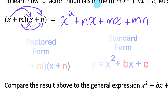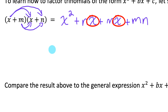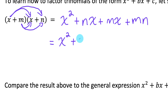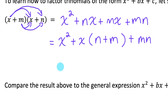To see the connection between the factored form and the standard form, I'm going to do a little manipulation with the expanded version. The middle two terms, nx and mx, both have an x, so I can factor out an x from those two terms. After cancelling, I'm left with x squared plus x times the quantity n plus m, plus mn.